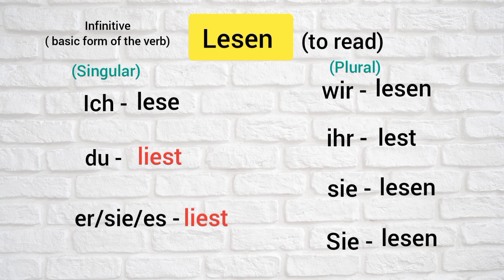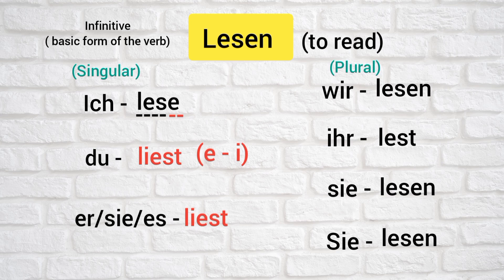Same as before, the root word plus e gives the regular base. But again, e changes into i for do and air zs, giving do least and air zs least. So lesan is also irregular with do and air zs. The other forms — via lesen, ear lasst, z lesen, z lesen — follow the regular pattern.